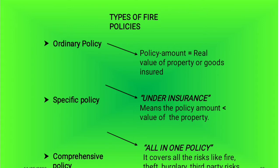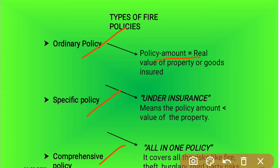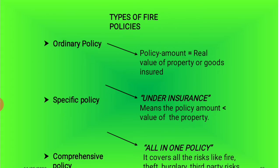Types of fire insurance policy: ordinary policy, specific policy, and comprehensive policy. In an ordinary policy, the policy amount is equal to the real value of the property and goods insured. In a specific policy, there is under-insurance, meaning the policy amount is less than the value of the property. In a comprehensive policy, it covers all risks like fire, theft, burglary, and third-party risk.